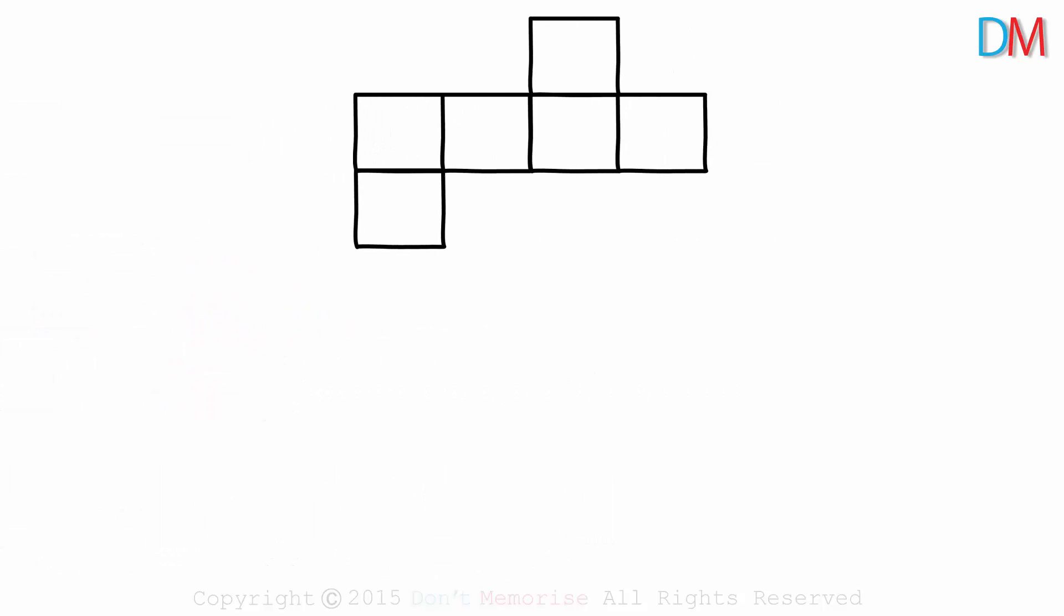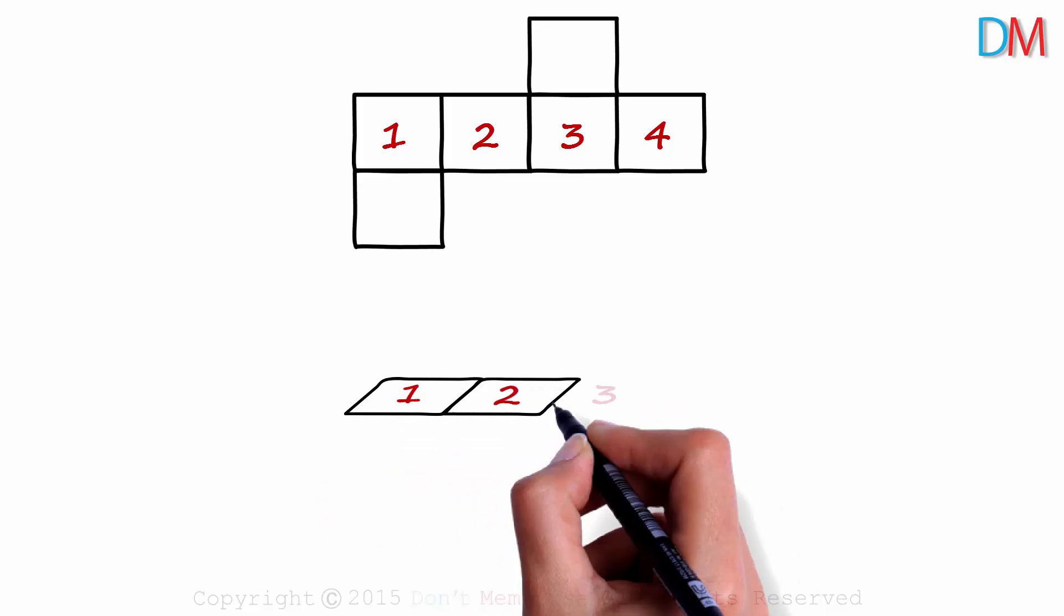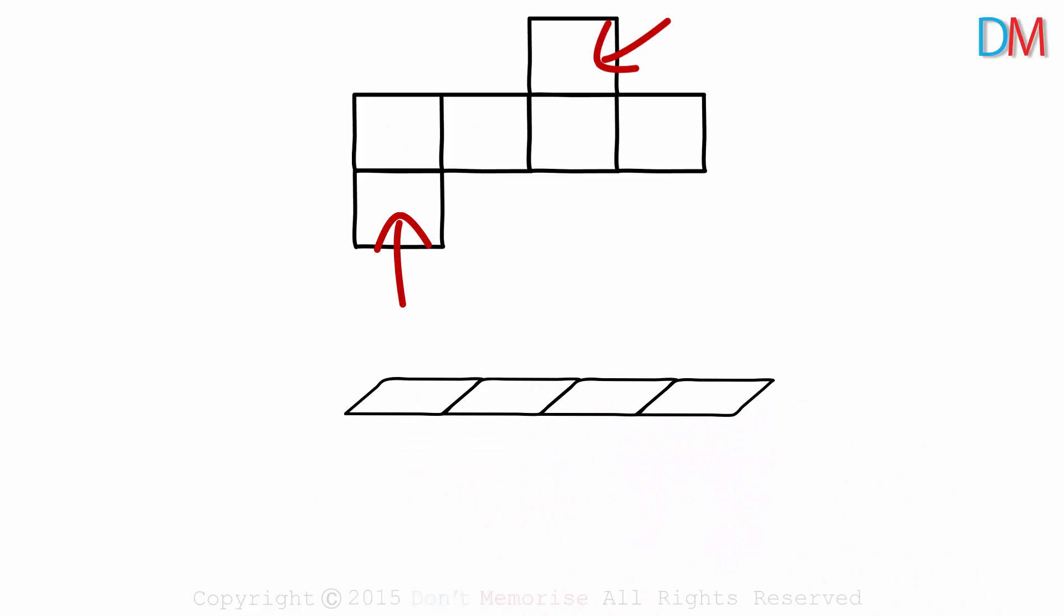We move on to the second net now. Pause the video and think if a cube can be formed with it. We use the same technique to start off. We draw the net as if it's lying on a plane. These four faces can be drawn like this. And the two faces attached to these two squares can be drawn like this. This net on a plane surface would look like this.